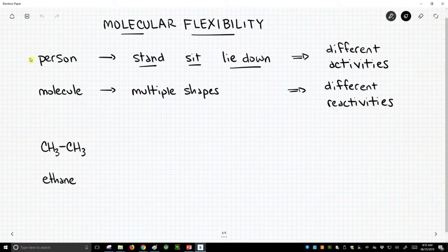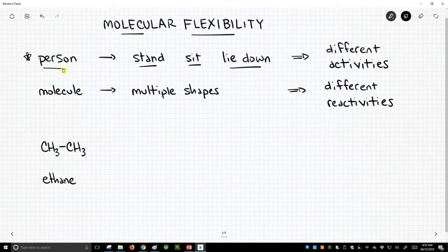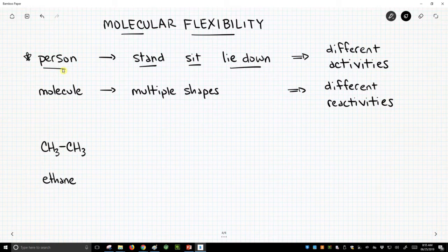As it turns out, when you talk about people, a person has multiple conformations. We refer to these as standing up or sitting down or lying down. Regardless of the shape of the person, it's still that same person. The shape of the person can define what activities that person is doing.